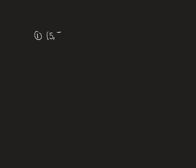The first problem gives the ordered pair in polar form (5, π/3), and it wants you to find three additional points with angles between negative 2π and 2π. It doesn't give any restriction on the radius.